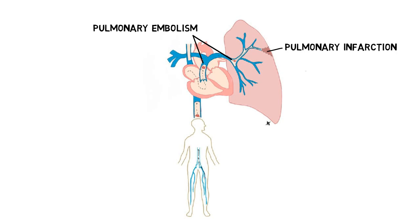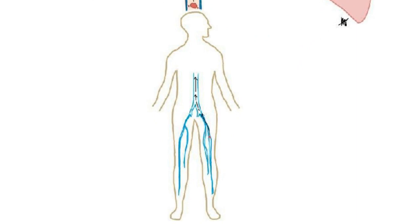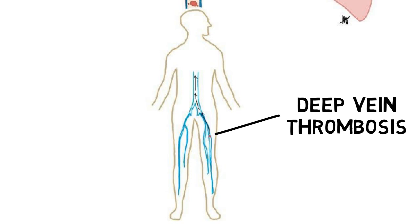Since this is an embolus, it must originate from somewhere. Most commonly it comes from deep vein thrombosis that gets dislodged and travels through the inferior vena cava into the heart and into the pulmonary circulation. However, pulmonary embolism may present alone without deep vein thrombosis symptoms.